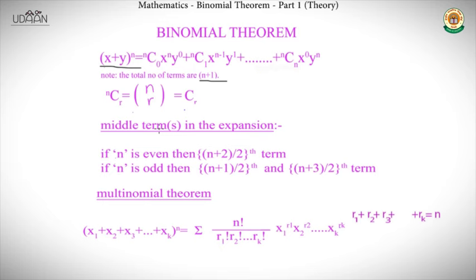The term nCr is a combinatorial quantity — it represents the number of ways to select r things out of n, where order does not matter. This is what distinguishes combinations from permutations, which you may have already studied or will study shortly.